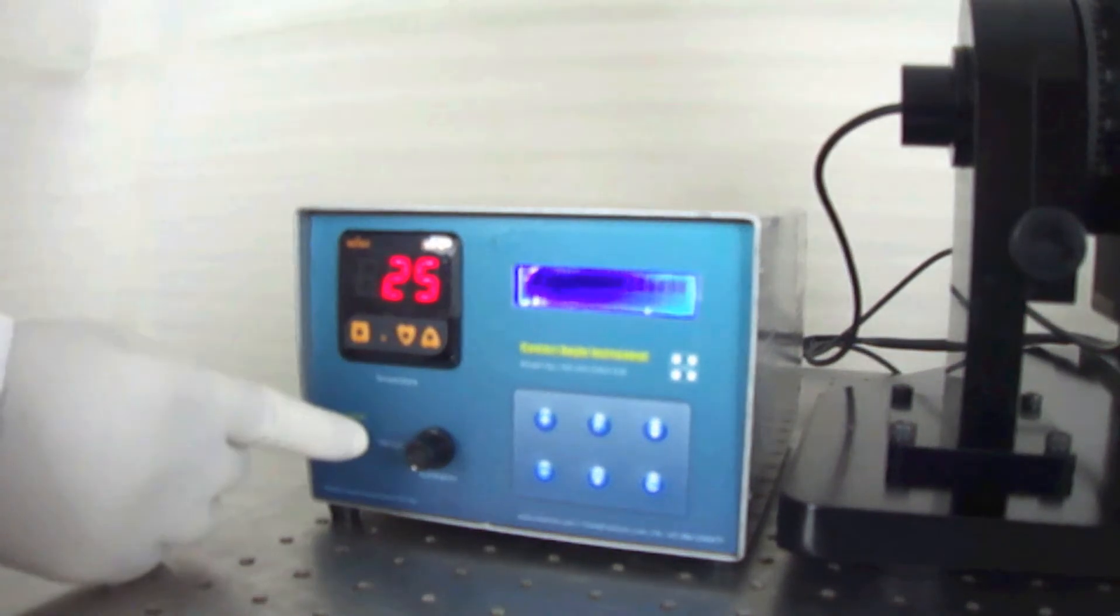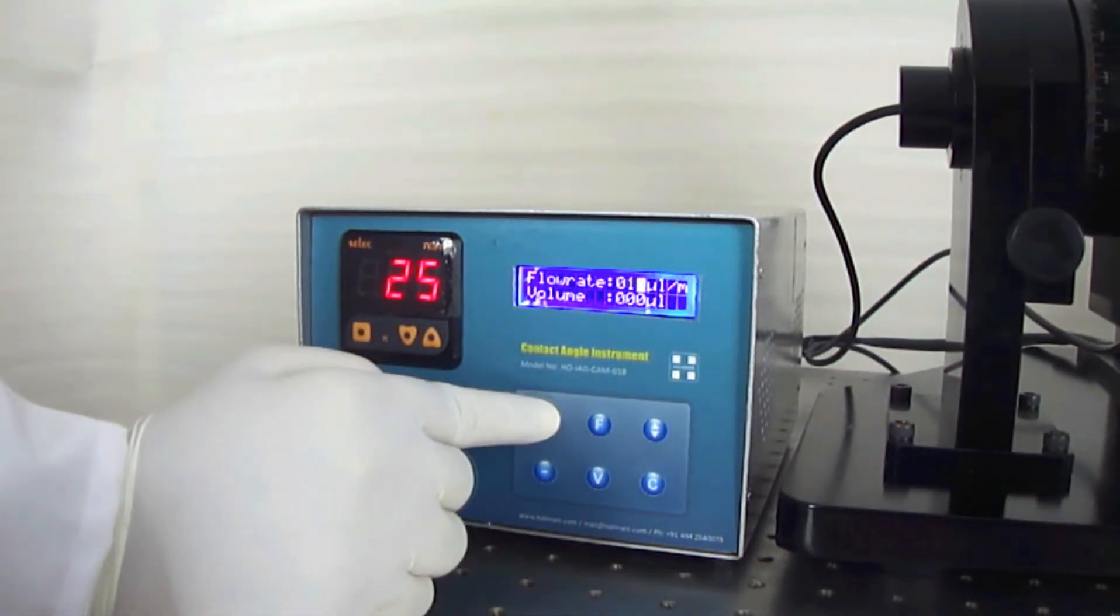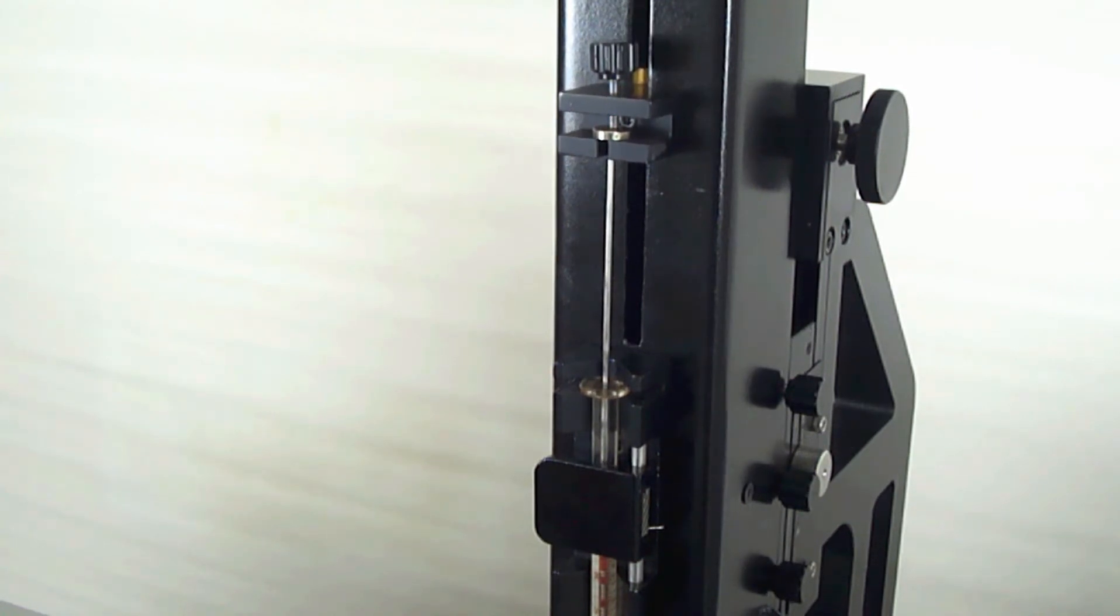The instrument control box has a keypad where you can enter various parameters like volume, flow rate, syringe diameter, etc. A flow rate of 1 microliter per minute to 100 microliters per hour is possible using this dispenser.